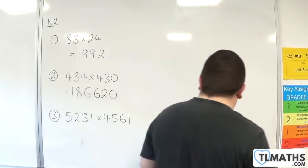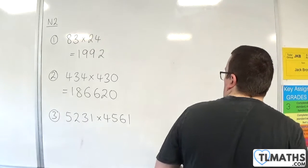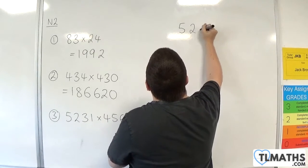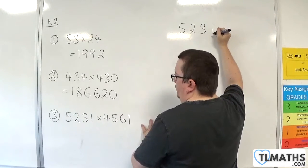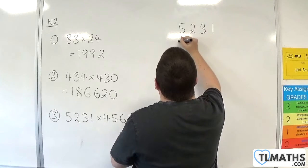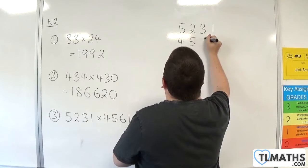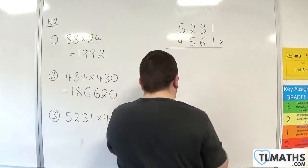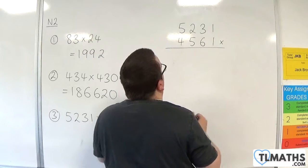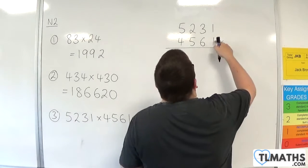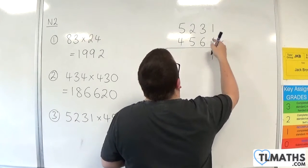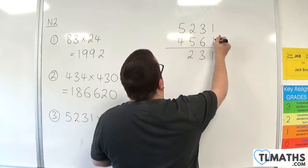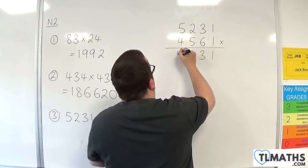So last example. We have 5,231 times 4,561. 1 times 1 is 1, 1 times 3 is 3, 1 times 2 is 2, 1 times 5 is 5.